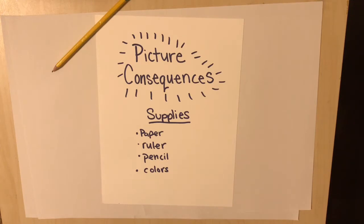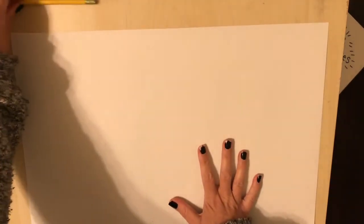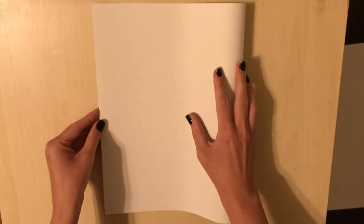When you get your supplies you can meet me back here. I already have my supplies, so if you need to press pause you're welcome to do that. For Picture Consequences, a nice rectangular piece of paper works best. I'm going to show you with my large paper so you can get a better idea of how to do this. First, you're going to fold your paper in half hamburger style — like a book.